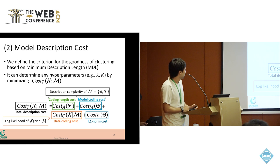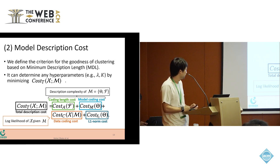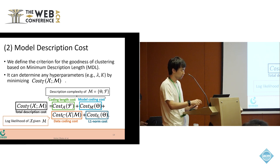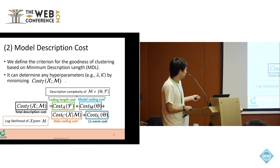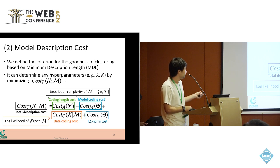By minimizing this cost function, it can determine any hyperparameters. The cost function consists of four terms: coding length cost and model coding cost are the description complexity of the model parameter.